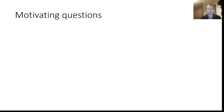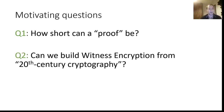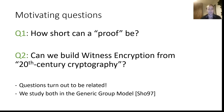Our motivating questions, as we come to this work: first, how short can a proof be? There is already a long series of work aiming to get proofs shorter and shorter — can we push this frontier further? Our second question: can we build witness encryption from 20th-century cryptography? Those questions turned out to be related, and we formalized them both in the generic group model offered by Shoop at 97.